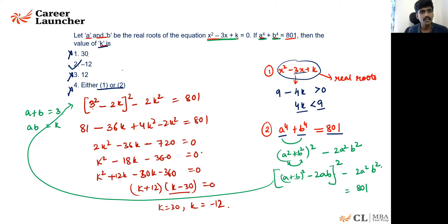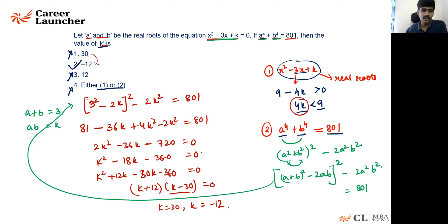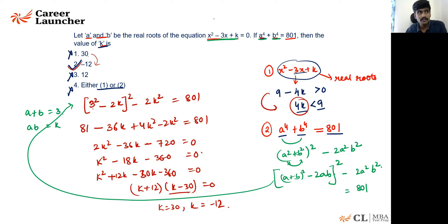If you solved algebraically you get k = 30 or k = −12. But since a and b must both be real roots, k cannot equal 30 — and using the discriminant condition alone, you could have answered in about 30 seconds.